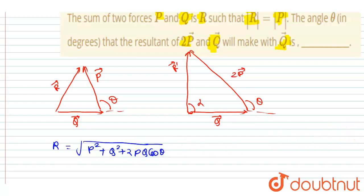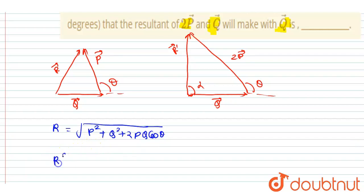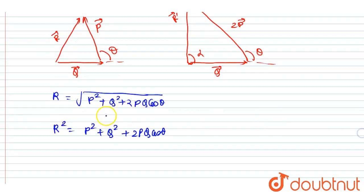Right, so if I will square both sides, I will get R squared is equal to P squared plus Q squared plus 2PQ cos theta. Right, so it is given that the magnitude of R is same as P, so I will write P squared is equal to P squared plus Q squared plus 2PQ cos theta.